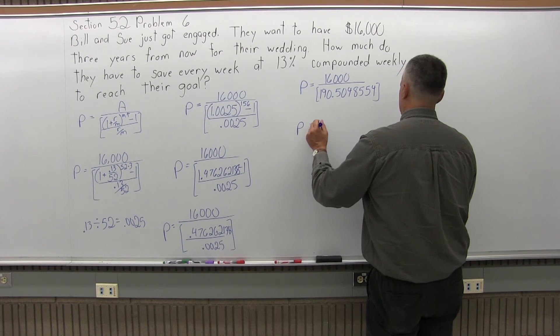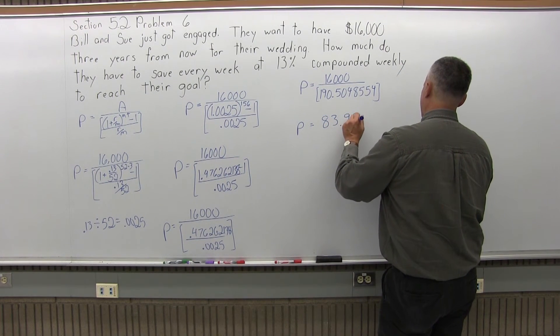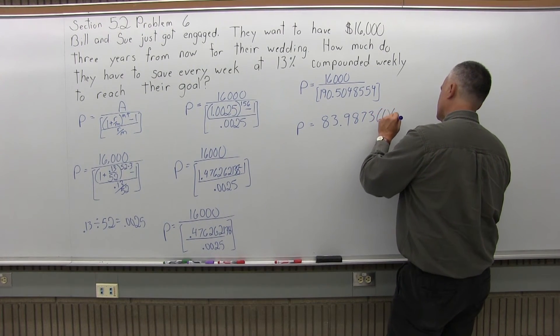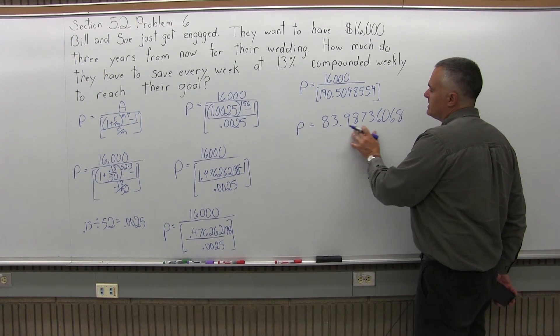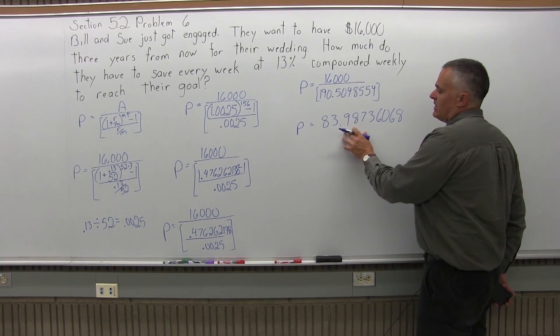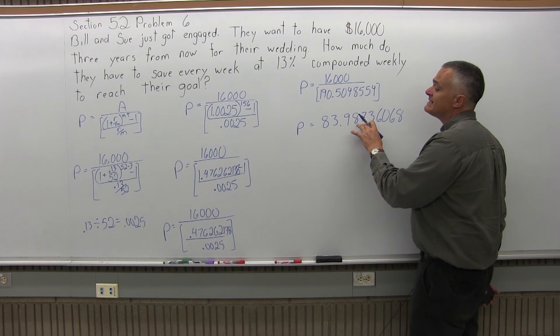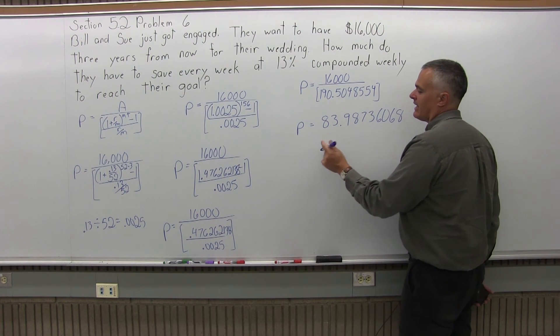And the answer comes out to 83.98736068. Now this answer is money, so I don't want to have all these places after the decimal. I want just two places. So after the decimal, I have 0.987 and then some other stuff. Well, the 7 is big enough to make it 0.99.